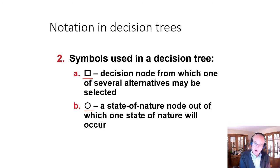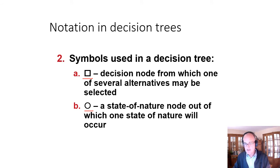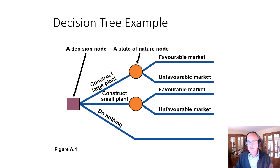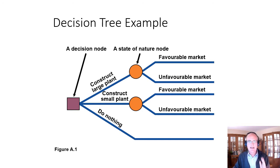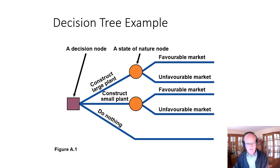We can also have decisions after uncertain outcomes, and I'll show you examples of that. Here we have a decision node with large plant, small plant, and nothing, plus a state of nature node. I continue to stress this because this is the place where students go wrong most easily.